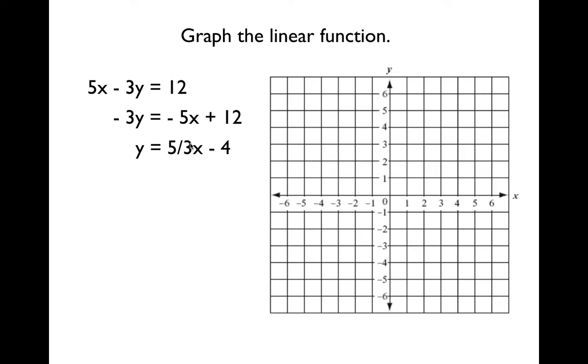Here we have our slope, and here we have our y-intercept. So we can plot this point — our y-intercept is negative 4, so we go down here to y equals negative 4 and we can plot that point.